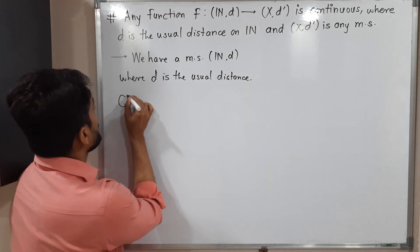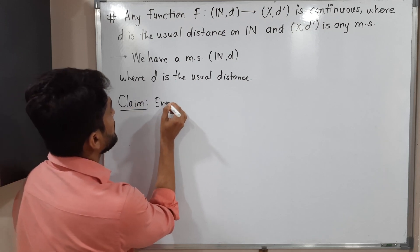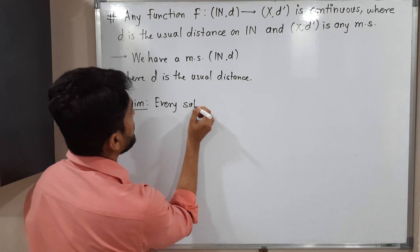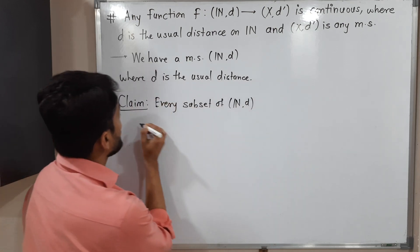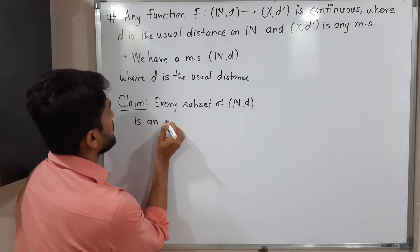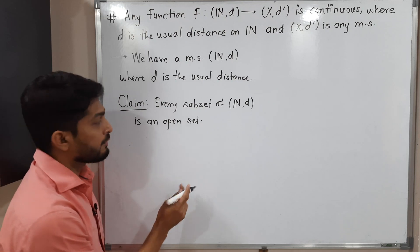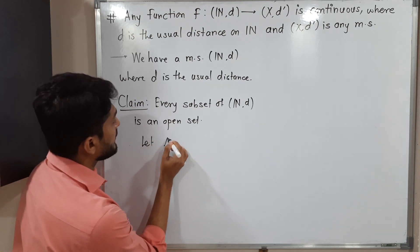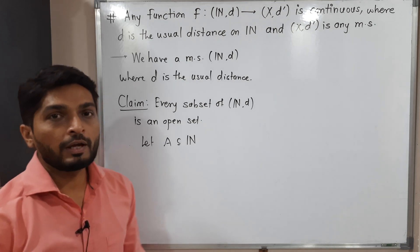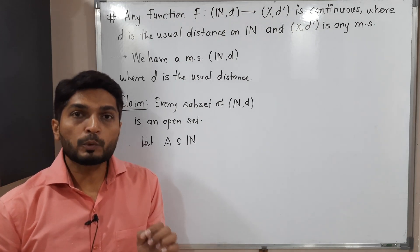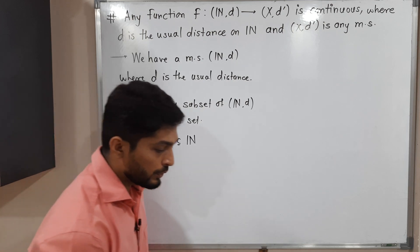Let us consider this claim. My claim is: every subset of (N, d) is an open set. I am going to consider one subset of N. Let A be a subset of N. We have to prove A is an open set. To prove any set is open, we have to take any arbitrary point.